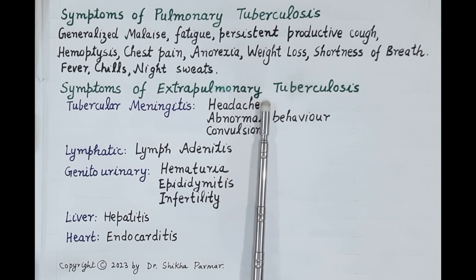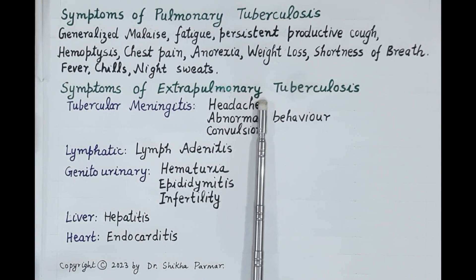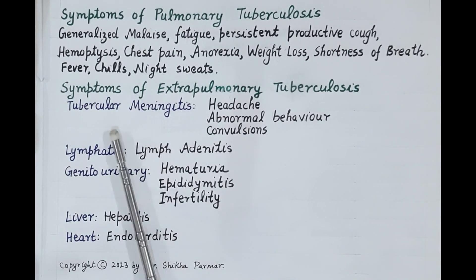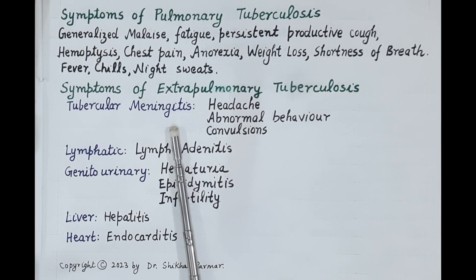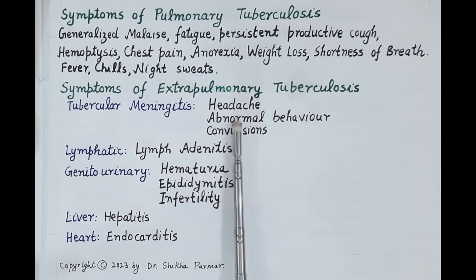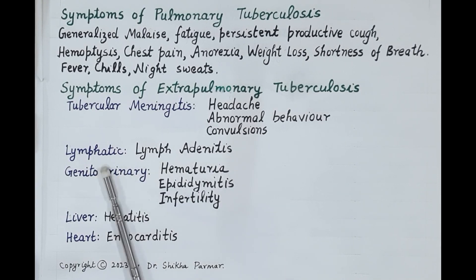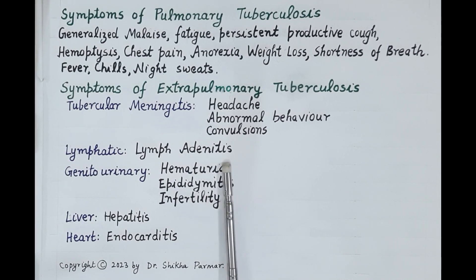Symptoms of extra-pulmonary tuberculosis depend on the organ infected. Infection of the central nervous system causes inflammation of the meninges of the brain and spinal cord — termed tubercular meningitis — with symptoms of headache, abnormal behavior and convulsions. Spread of TB to the lymph nodes can cause lymphadenitis, which is inflammation of the lymph nodes.